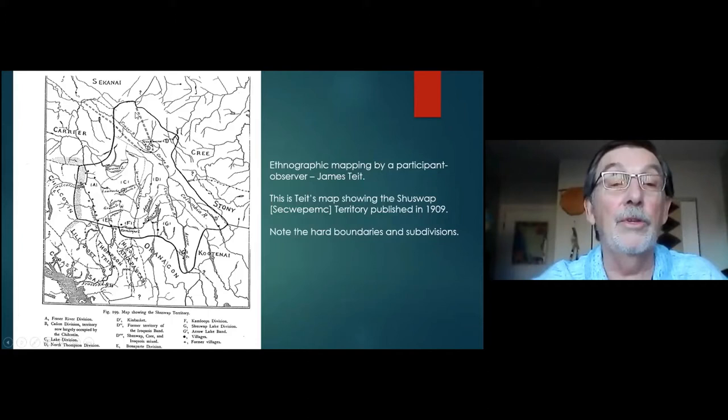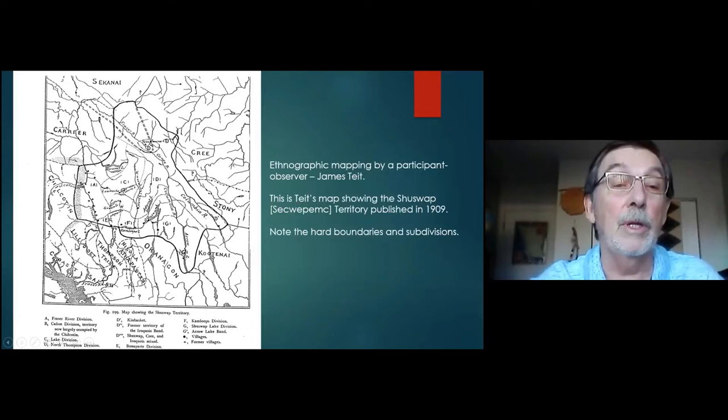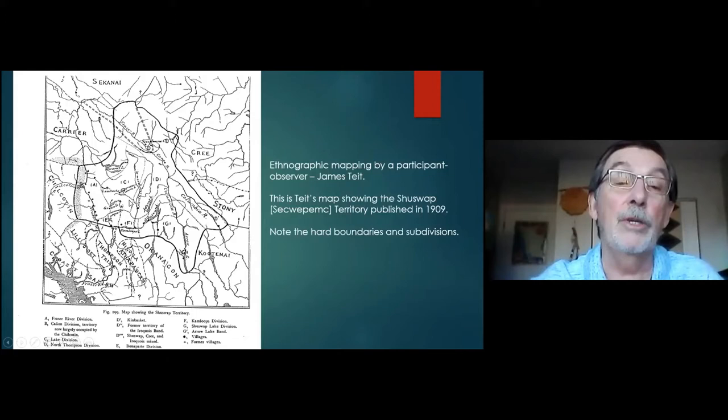This is another map showing the Shuswap or Sequepnick territory by this bold black line, and the surrounding First Nations: the Carrier, the Cree, the Stoney, the Kootenai, the Okanagan. Here's the Thompson or Inla Capamook, Lillooet and Chilcotin. Here's Kamloops. Within the Sequepnick territory, he created divisions that he recognized between the Sequepnick — there are variations in dialects and kinship affinity, which is what these letters are all about.